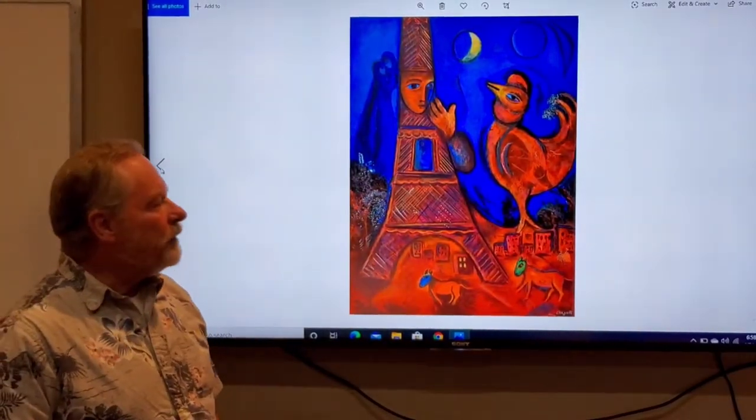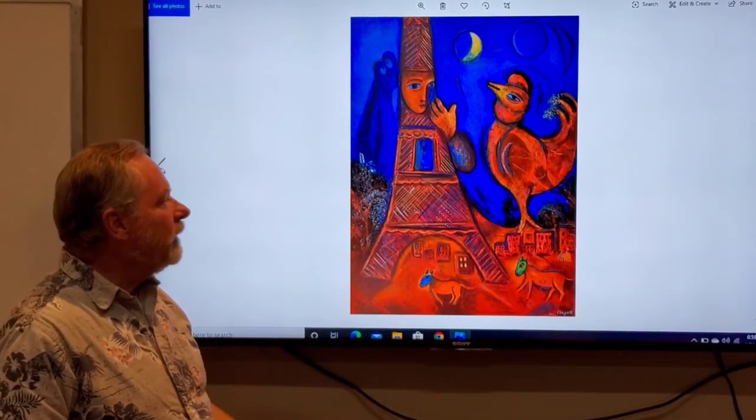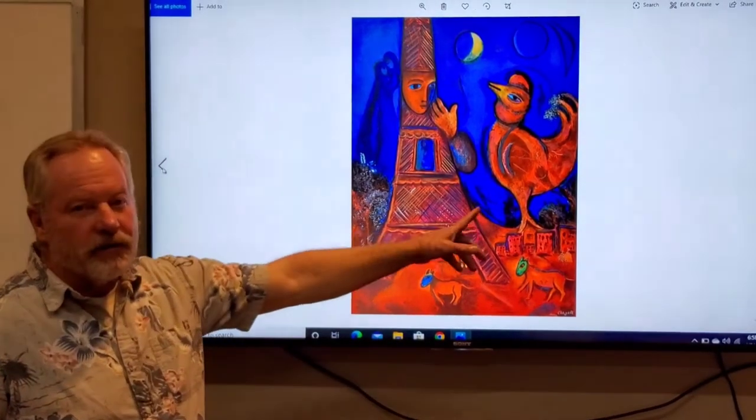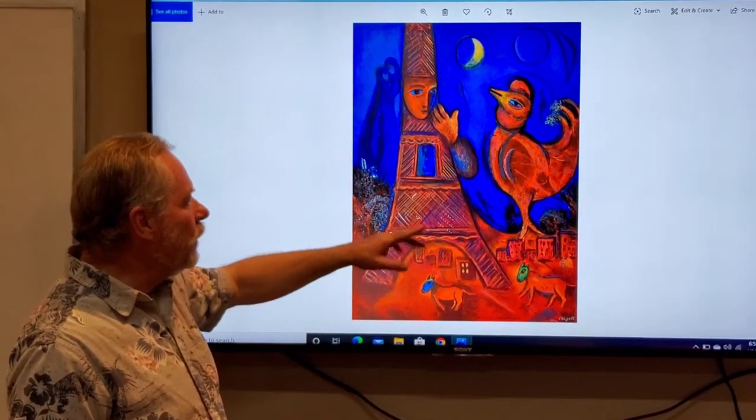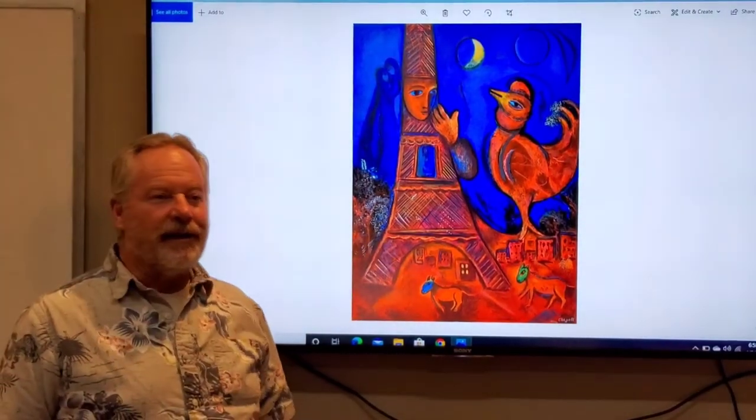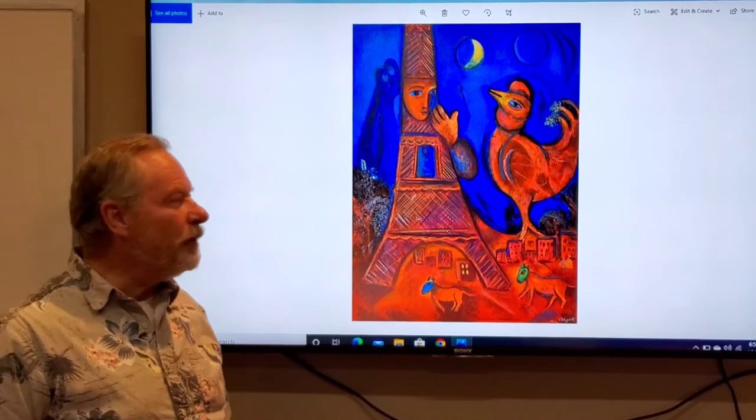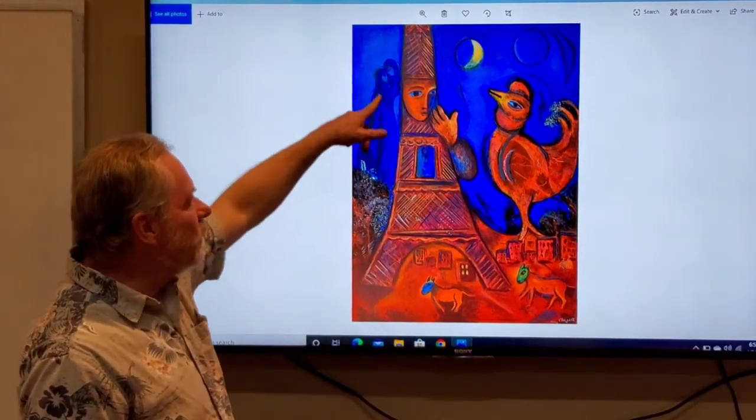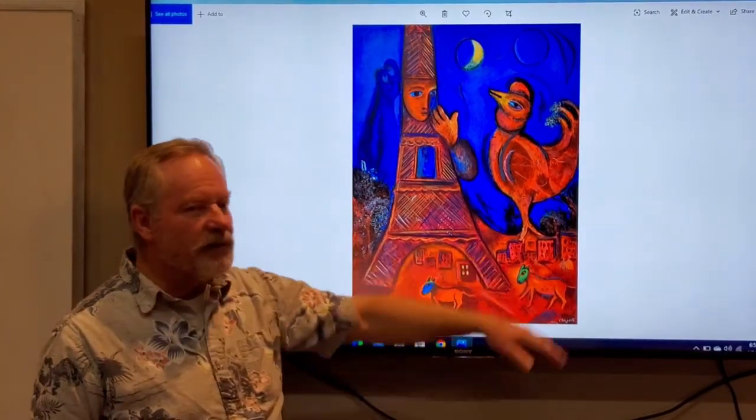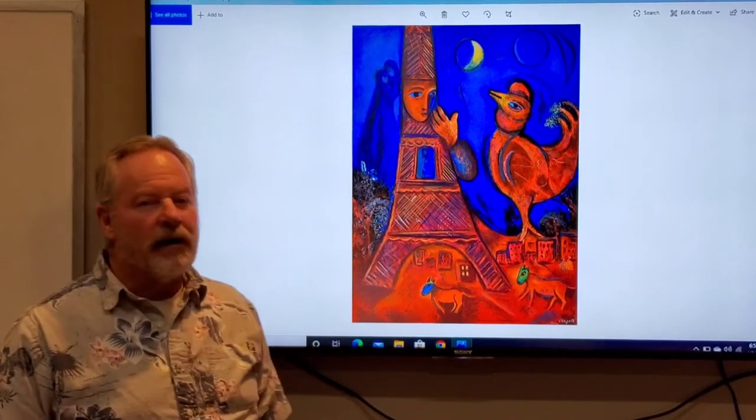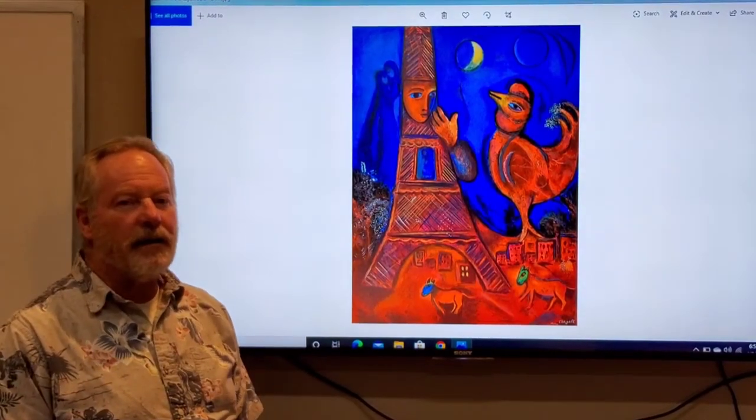Another example of an objective abstract. I mean you've got a chicken that's almost as tall as the Eiffel Tower. You've got the Eiffel Tower who is basically human. You've got these figures in the background. You've got the buildings there that are quite small. And so this is once again an objective abstract.